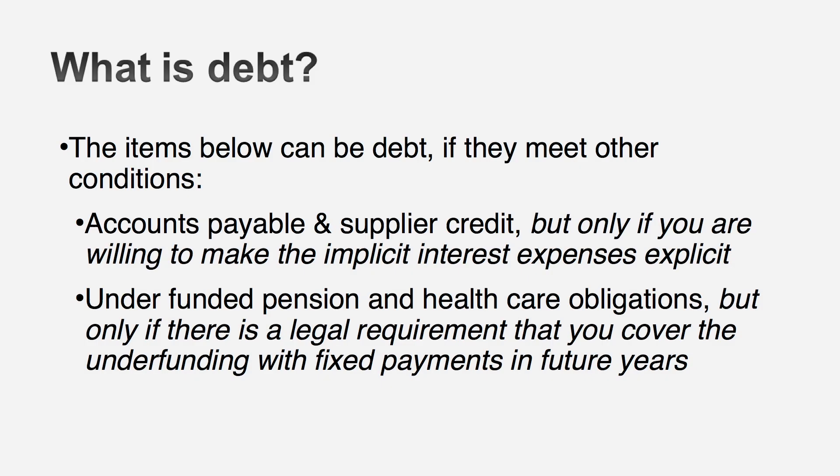Using those criteria, let's go through a balance sheet. Obviously all interest-bearing debt meets the criteria — short-term as well as long-term, bank loans and corporate bonds. Accounts payable and supplier credit come close, but here's where they fall short: when a supplier offers credit, you can often pay in 55 days instead of 5, but you lose a discount. There's an implicit interest expense associated with using accounts payable and supplier credit. If you're willing to make those implicit expenses explicit, you can treat accounts payable and supplier credit as debt — but that requires going through cost of goods sold to find how much you lost in discounts.